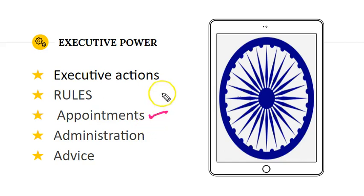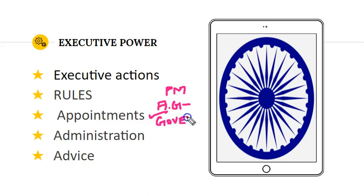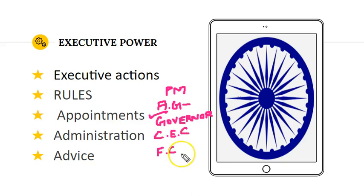The President appoints the Prime Minister and the other Council of Ministers. Apart from that, the President also appoints the Attorney General and decides his remuneration. The Attorney General holds office at the pleasure of the President — there is no formal removal procedure; if the President decides to remove the Attorney General, he can do so. The President also appoints the Governor of the State, the Chief Election Commissioner, and the members and Chief of the Finance Commission.